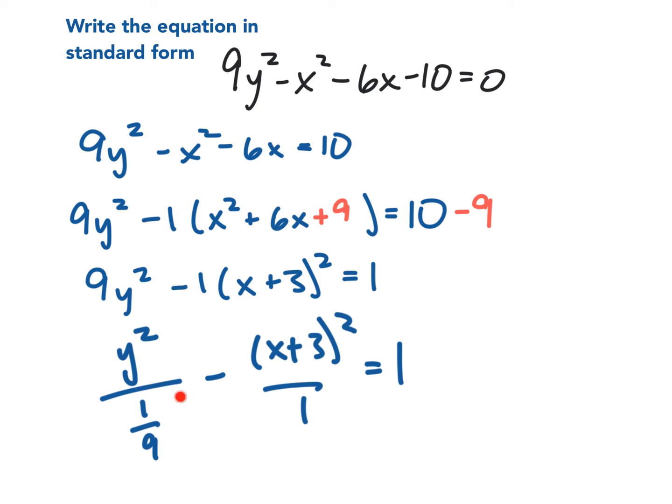Which this tells me that this is a², so a is 1/3. So it would go up and down a third in the y direction. All right, and then from that you could graph it based on the previous example. But yeah, that's hyperbolas. Goodbye.